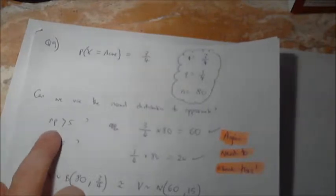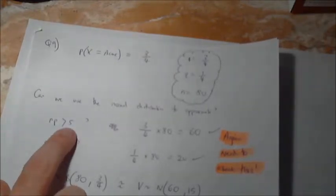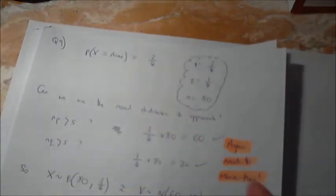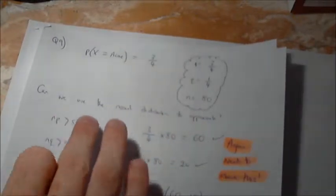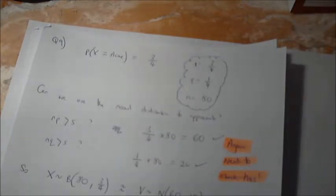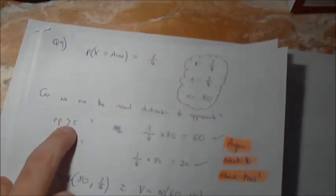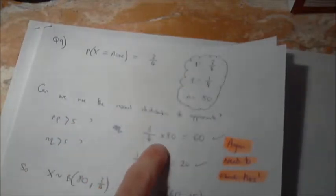So we need to check to see whether NP is bigger than 5. So I actually write this: Can we use the normal distribution to approximate? The examiner really likes it if you use things like that because it's showing that you understand the question. So NP, is it bigger than 5? So I put N, which is 80,